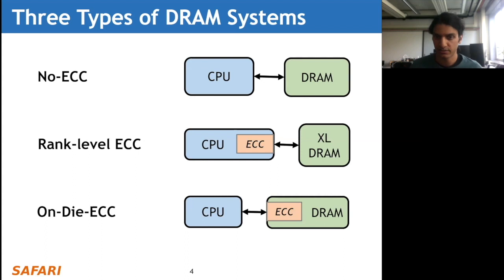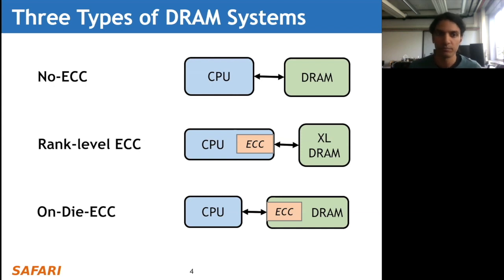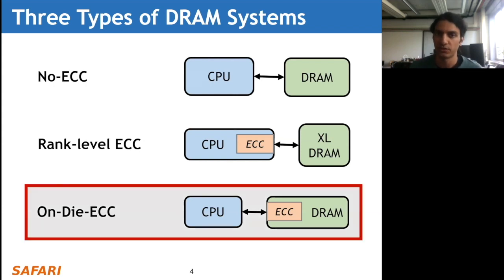The third type of system is called on-die ECC, where the ECC logic is contained within the DRAM chip itself. From the perspective of the CPU, this is exactly the same as the no-ECC system - the CPU is just reading and writing data from the DRAM. Instead, the DRAM internally generates its own parity check bits and stores them within the DRAM itself; the CPU is essentially unaware that any of this is happening. In our work, we're focusing primarily on this case of on-die ECC.